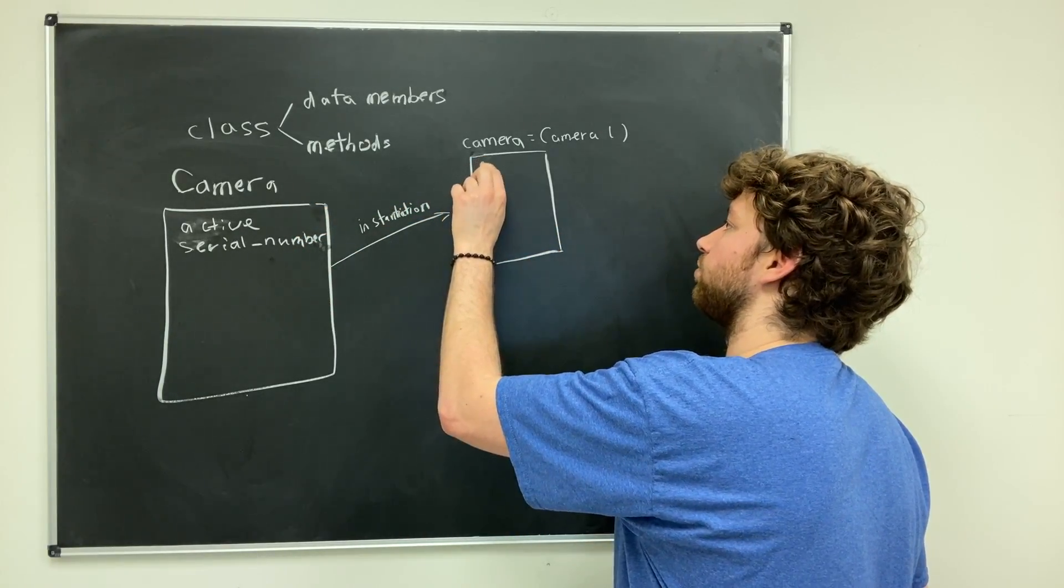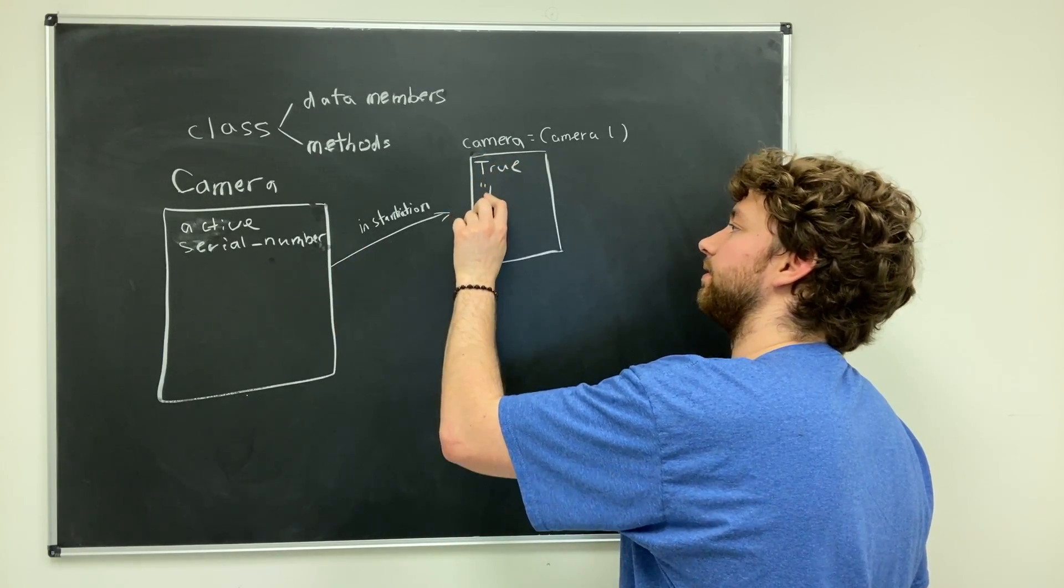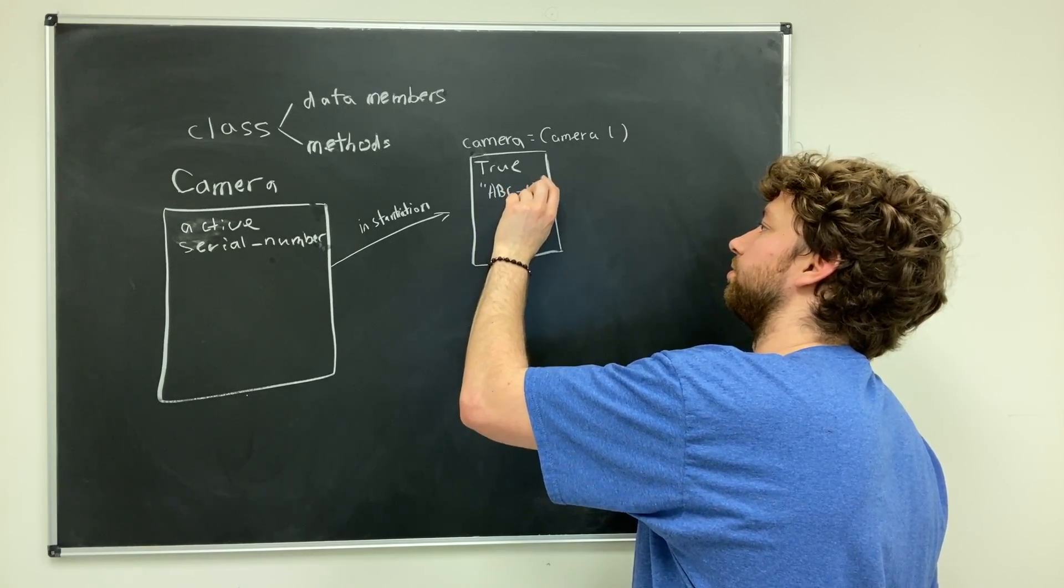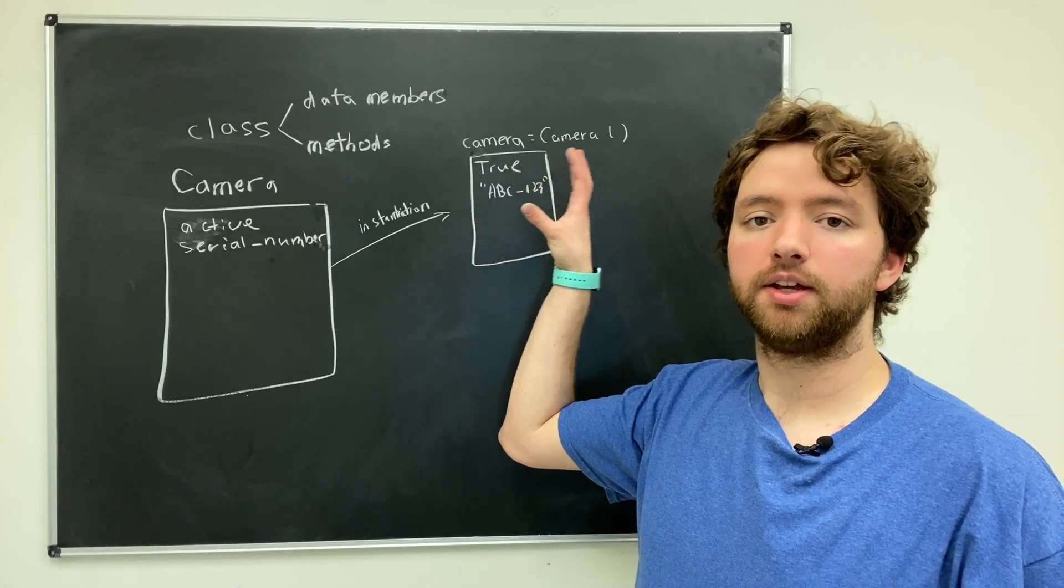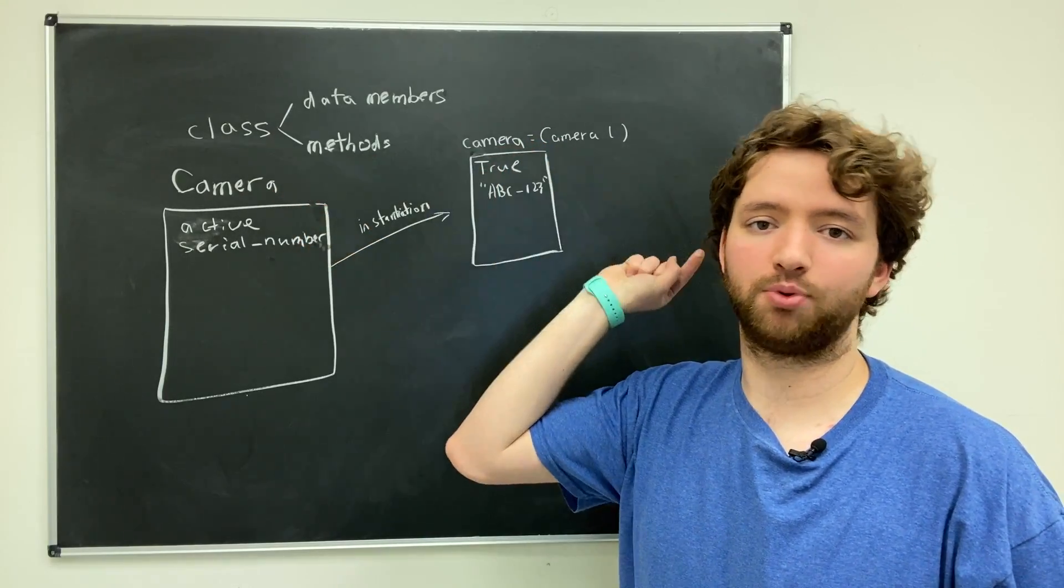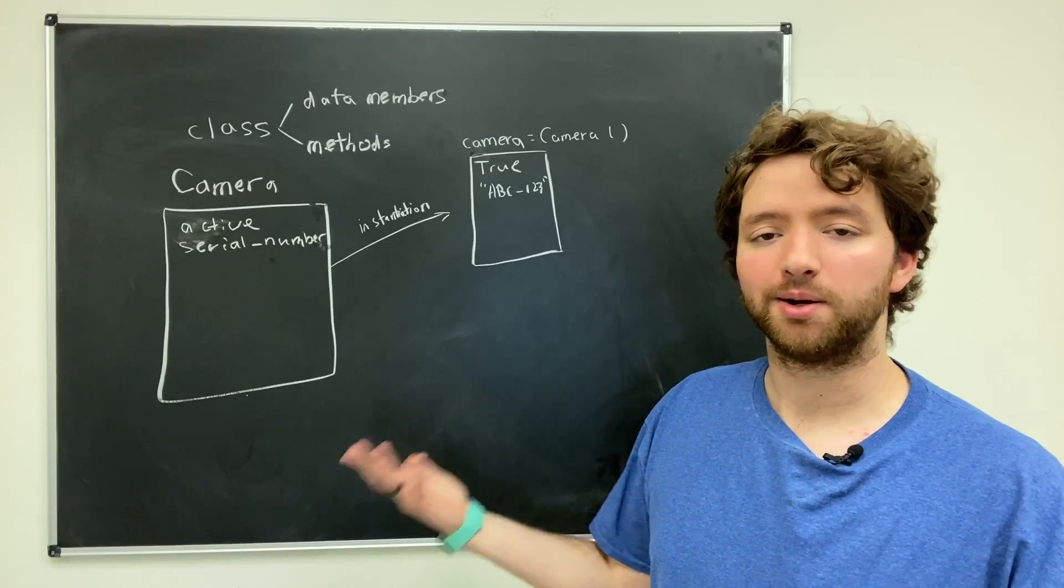We could say true for active, and for the serial number we give it some really meaningful serial number such as abc123. This would describe a specific camera. This might be the camera inside of the closet that's pointing at the corner of the wall. I don't know why they put a camera there—that's besides the point.